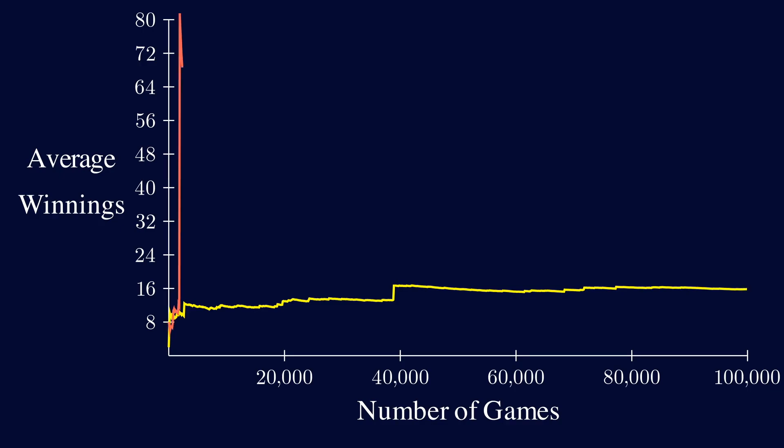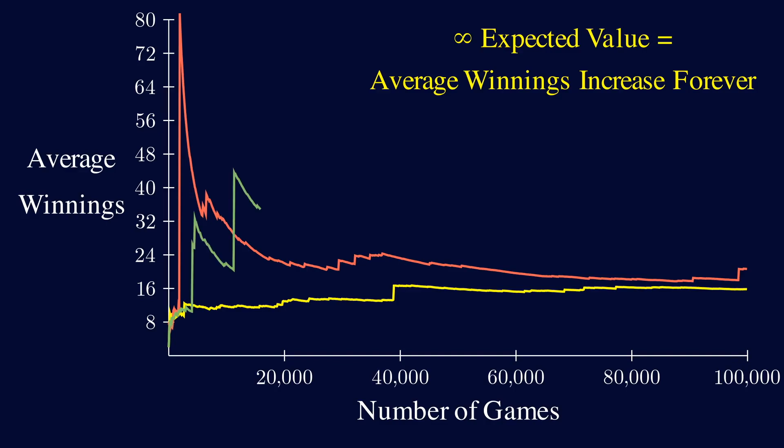If we repeat this for other runs, it seems to verify that the average winnings is increasing. This is actually what an infinite expected value means. It means the average winnings will increase without bound, but it says nothing about how fast it's increasing.